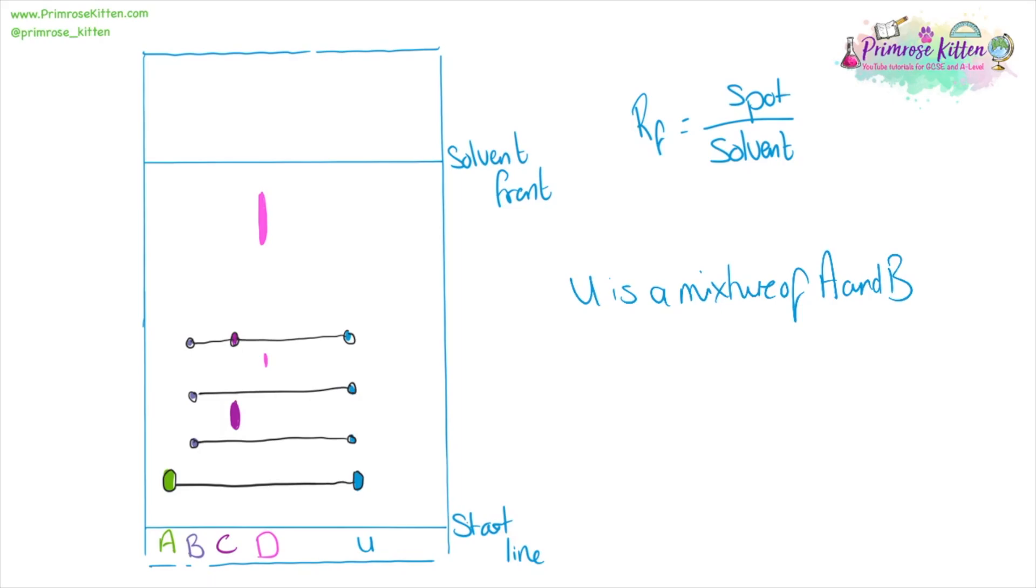Now we can work out the RF value of some of these spots. We need to measure the distance moved by the spot. That is going to be from where the spot started and I'm going to measure the distance of this spot here. We're going to measure from the middle of the spot. That's really important, it's from the middle of the spot not the top not the bottom, the middle of the spot.